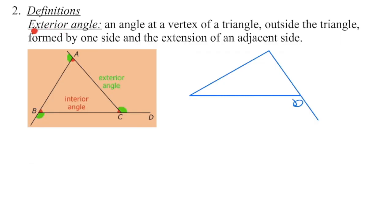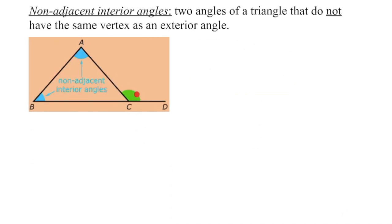An exterior angle in a triangle is one on the outside. If you draw a triangle and then extend any one of the side lengths, the angle formed between that extended side length and the other side of the triangle is the exterior angle. On this particular vertex, if I extend one way and also the other way, the exterior angle is the one between that extended side length and the other side of the triangle. If this is my exterior angle, these two angles are my non-adjacent interior angles — non-adjacent means not beside. The adjacent angle to the exterior angle is the one right next to it; the other two are non-adjacent and interior, meaning inside the triangle.